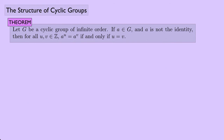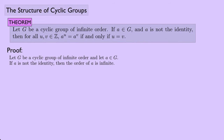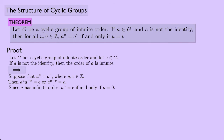Here's the formal proof. Let G be a cyclic group of infinite order and let A be an element of G. If A is not the identity, the order of A is infinite. Forward direction: suppose A^U = A^V; then A^(U−V) = identity. Since A has infinite order, A^n = identity if and only if n = 0, so U − V = 0, meaning U = V. Backwards direction: if U = V, then clearly A^U = A^V.